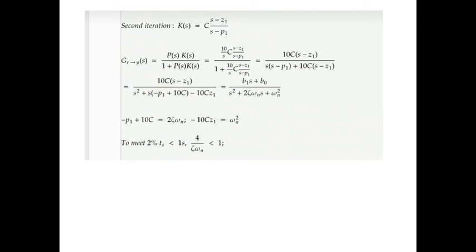We go to the second iteration. A general controller form is introduced where z1 is a zero and p1 is a pole for K(s). Substituting P(s) and K(s) into the map yields a second-order form. Equating coefficients, we get: −p1 + 10c = 2ζωn and 10c·z1 = ωn². For second-order systems, the two-percent settling time is approximately four times 1/(ζωn), which should be less than one second.